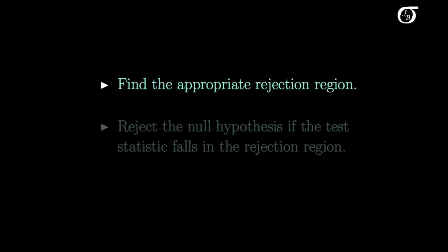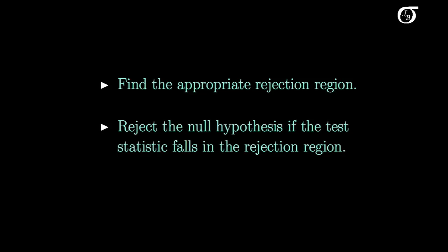Then we're going to find the appropriate rejection region, which depends on our choice of alpha and on the alternative hypothesis. We will then reject the null hypothesis in favor of the alternative hypothesis if the test statistic falls in the rejection region.